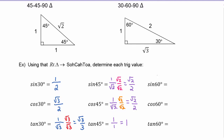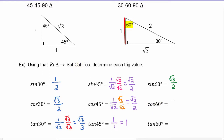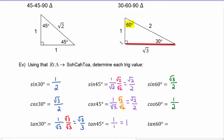Moving on to 60 degrees. Sine of 60 is opposite over hypotenuse: the opposite leg is radical three and the hypotenuse is two, so sine of 60 degrees is radical three over two. For cosine of 60, adjacent over hypotenuse: the adjacent leg is one and the hypotenuse is two, so cosine of 60 degrees is one-half. For tangent of 60, opposite over adjacent: the opposite leg is radical three and the adjacent leg is one, so radical three divided by one is radical three.